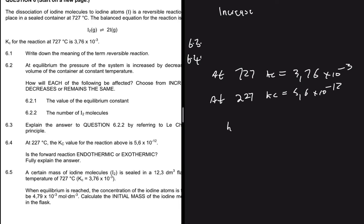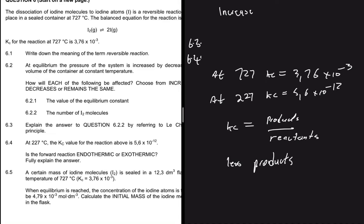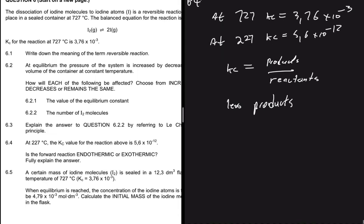What does the Kc value tell us? Kc equals concentration of products divided by concentration of reactants. If we decrease temperature and Kc goes down, we have fewer products — meaning the reverse reaction was favored by the decrease in temperature. A reaction favored by a decrease in temperature is exothermic. So the reverse reaction is exothermic.